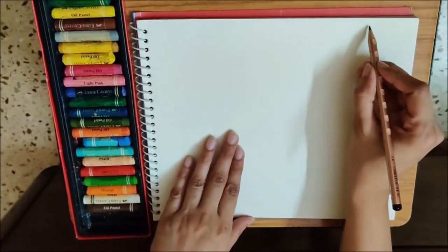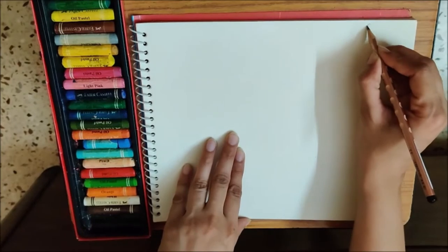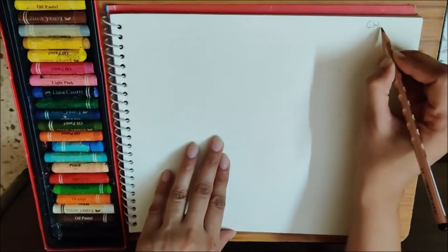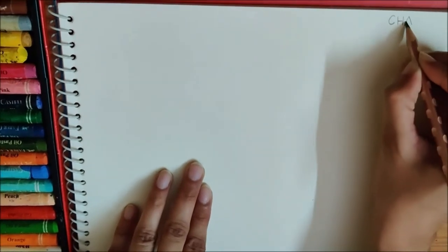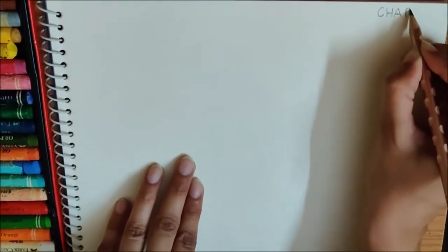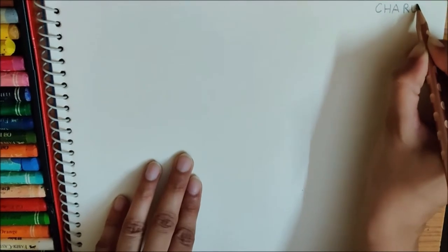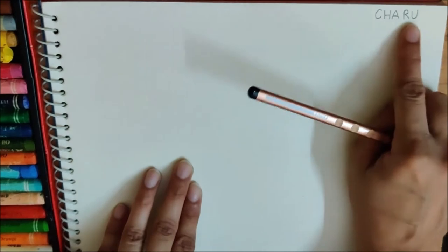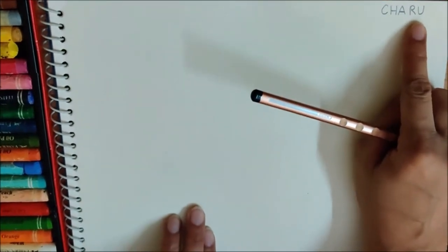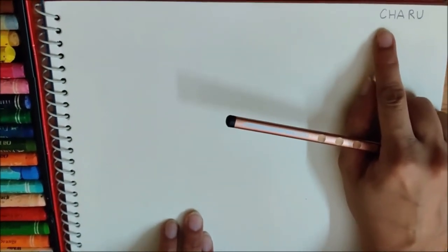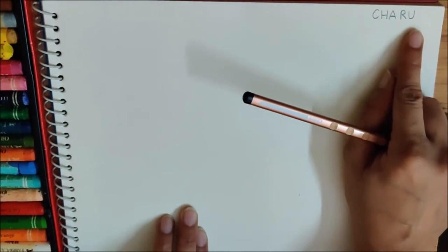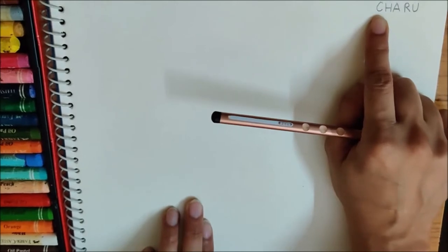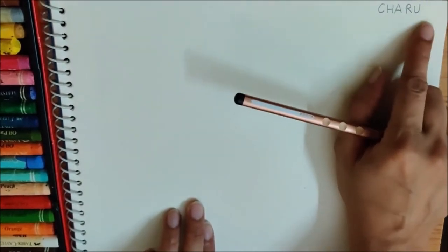So here I am writing my name. C-H-A-R-U. This is my name in small letters. Now, I am going to write these letters again in big. What is the first letter? C. I have written my name. You will write your name.